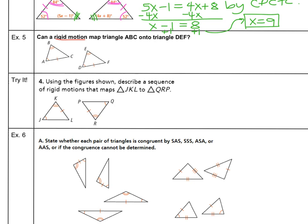Example 5. Can a rigid motion map triangle ABC onto triangle DEF? Well, notice angle A needs to correspond with angle D. AC needs to correspond to DF. And angle B needs to correspond with angle E. It looks like you can just glide or translate triangle ABC to make that happen. Our rigid motion, then, would simply be a translation. And that would make the two triangles congruent this time by angle-angle-side.